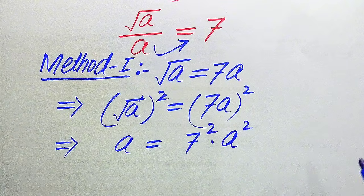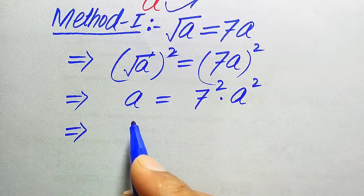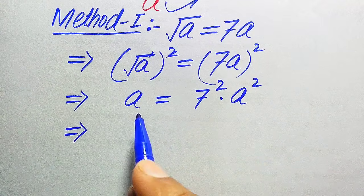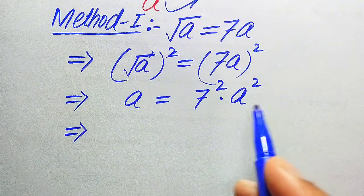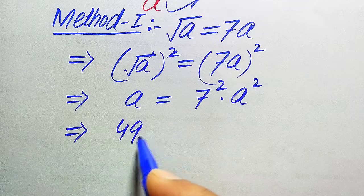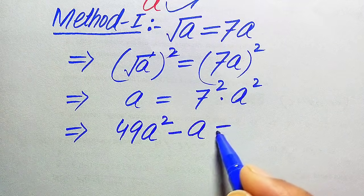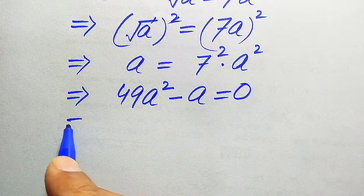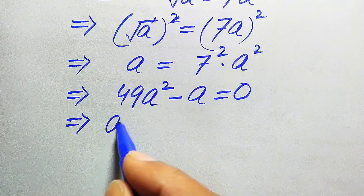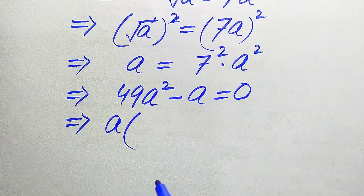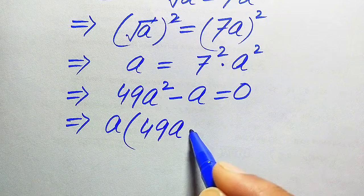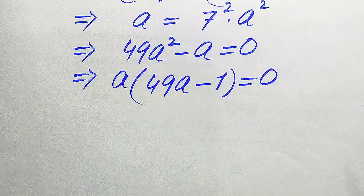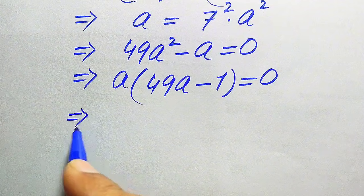In the next step we move the variable term from the left-hand side to the right-hand side, so a moves from left to right. Since it is a positive term, when we move it to the right-hand side it becomes negative. So 7 squared becomes 49 times a squared minus a equals zero. Both terms involve a, so we factor out a, giving us a times (49a minus 1) equals zero.